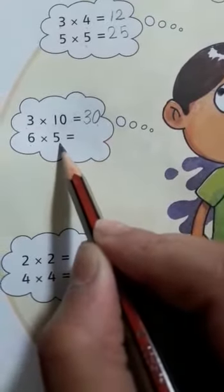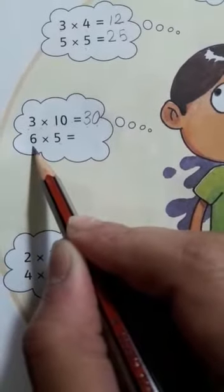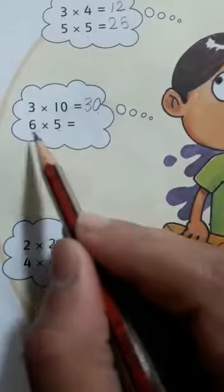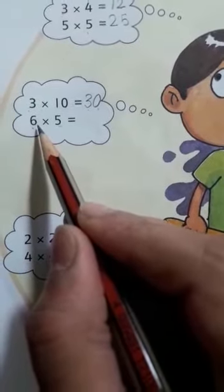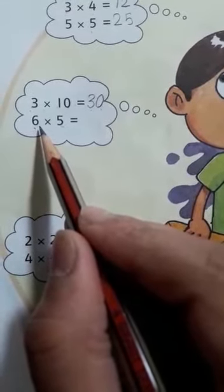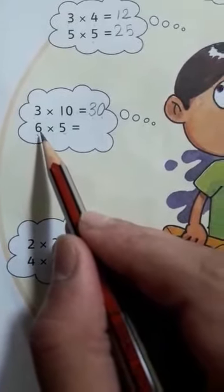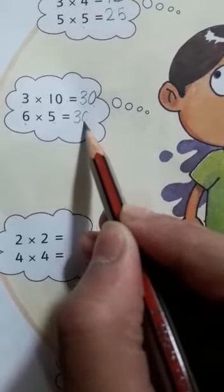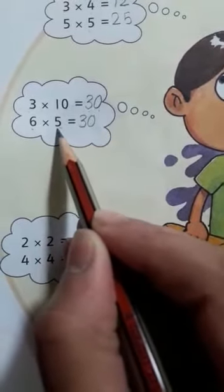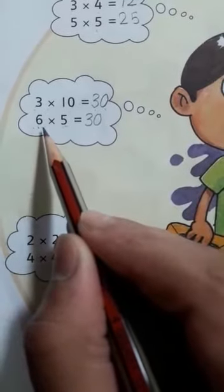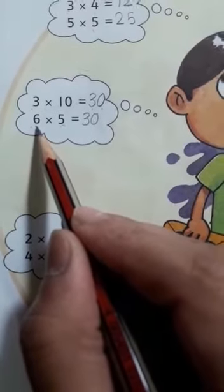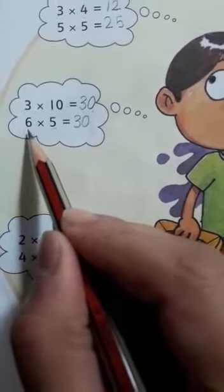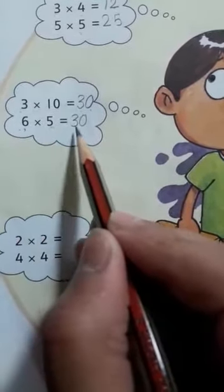Now 6 times 5 and 5 times 6. First 5's table: 5 ones are 5, 5 twos are 10, 5 threes are 15, 5 fours are 20, 5 fives are 25, 5 sixes are 30. Now 6's table: 6 ones are 6, 6 twos are 12, 6 threes are 18, 6 fours are 24, 6 fives are 30.